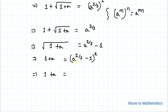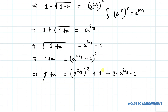Expanding the right-hand side: 1 + a = a^(4/3) − 2·a^(2/3) + 1. The 1's on both sides cancel, leaving a = a^(4/3) − 2·a^(2/3).